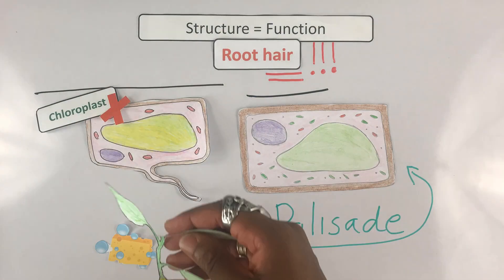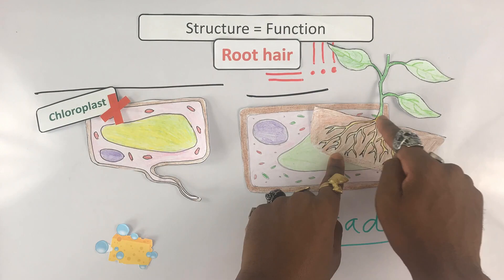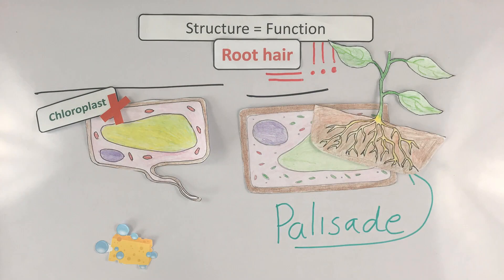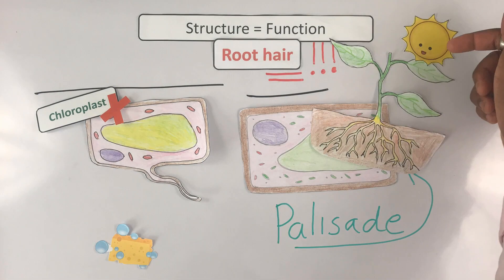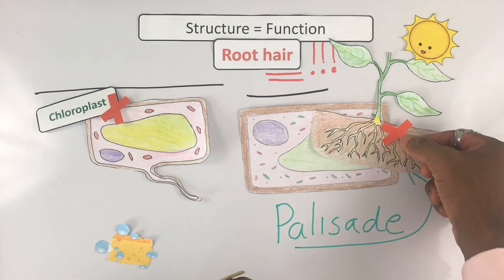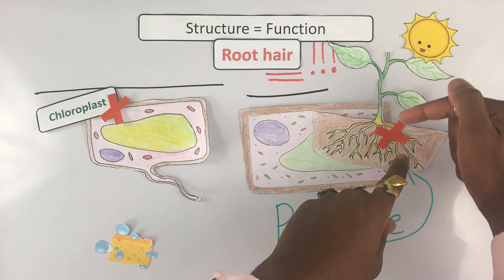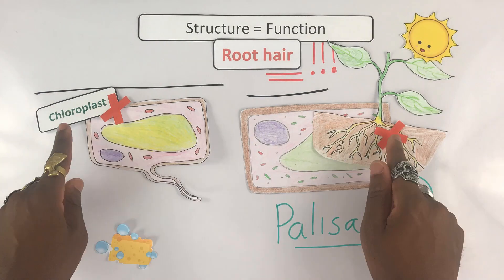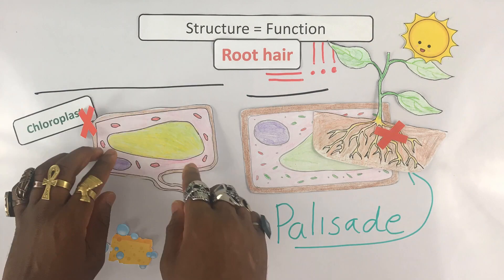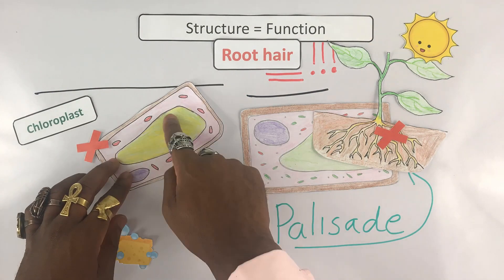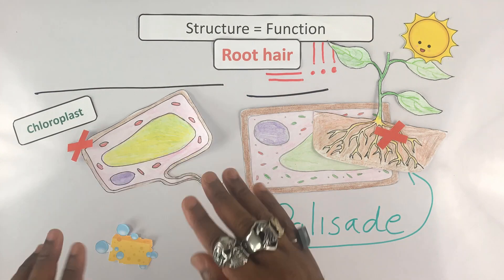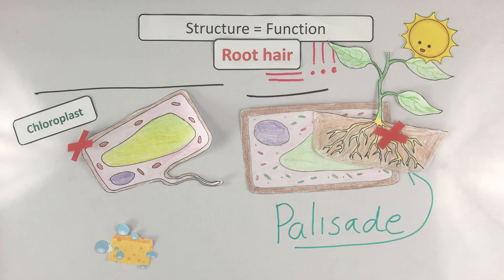If you think about it, the roots of plants aren't usually green, and for a good reason — there's no sunlight there, it's obscured by the soil. So it would be a waste of resources to make chloroplasts there.